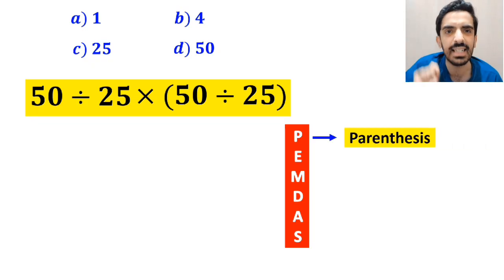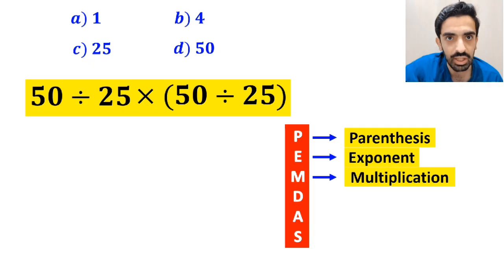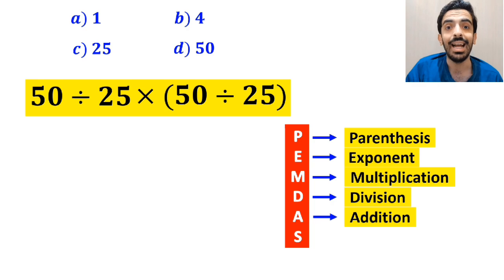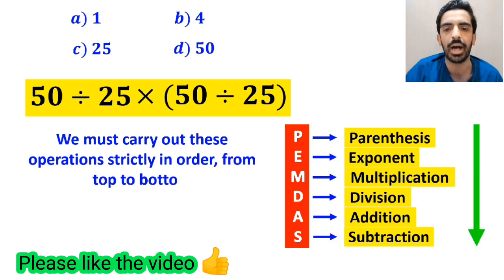P stands for parenthesis, E stands for exponent, M stands for multiplication, D stands for division, A stands for addition, and S stands for subtraction. We must carry out these operations strictly in order from top to bottom.